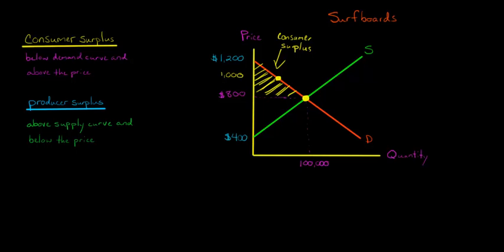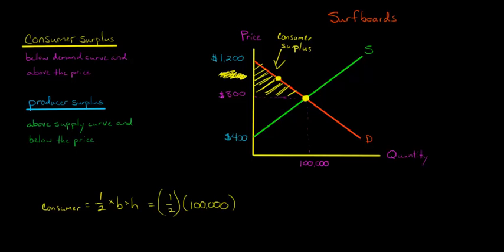We can calculate the area of that triangle. Consumer surplus equals one-half times base times height. The base is 100,000 (which is 100,000 minus zero), and the height is $1,200 minus $800, which is $400. Multiplying all this out: one-half × 100,000 × $400 = $20 million. So $20 million is the consumer surplus.